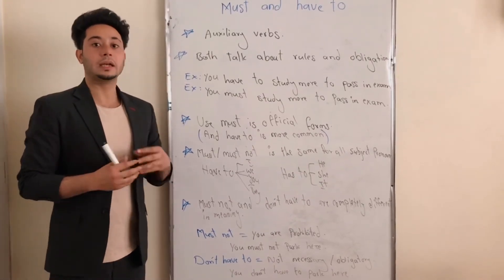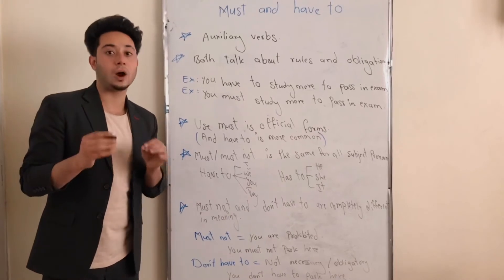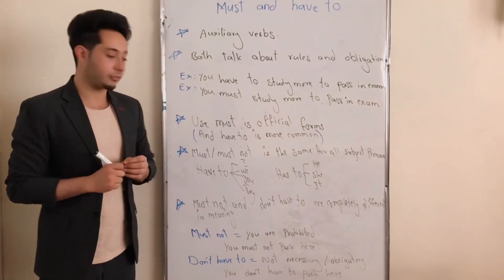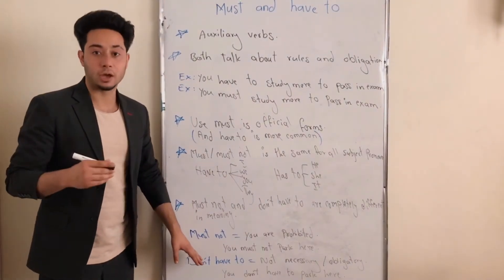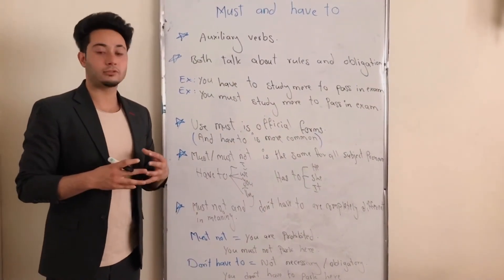Okay, let's talk about the negative form of have to and also must. The negative form of have to is don't have to, and the negative form of must is must not. Okay, are they completely the same in negative forms or no?